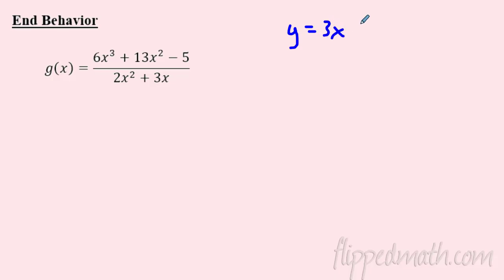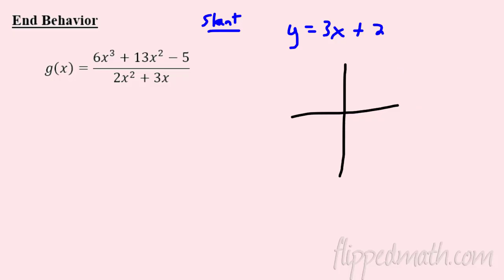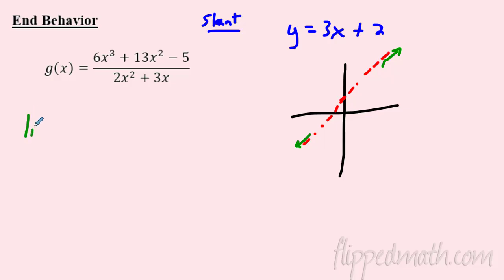This is the same example from before — it has a slant asymptote of y = 3x + 2. Can we use that to determine end behavior? Sure! If I know the slant asymptote is 3x + 2, I know it crosses the y-axis at 2 and has a slope of 3. I don't know exactly what the graph looks like, but the function is going to follow that line forever in both directions.